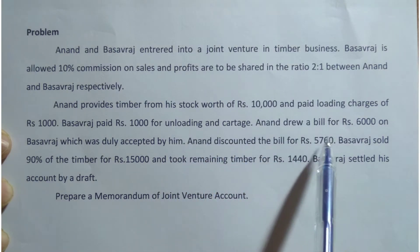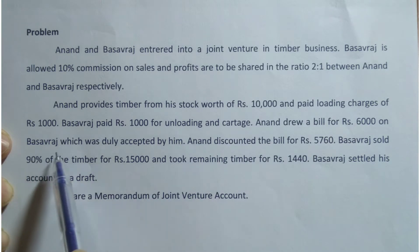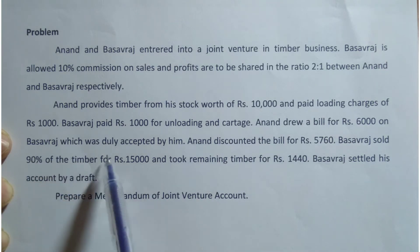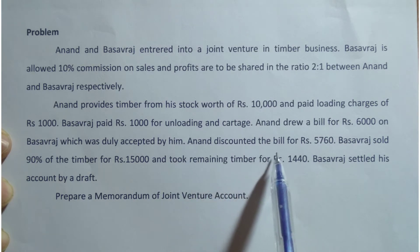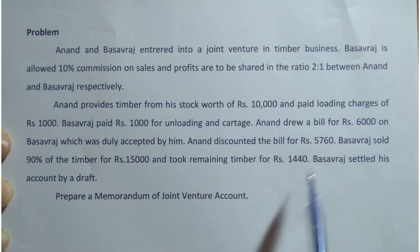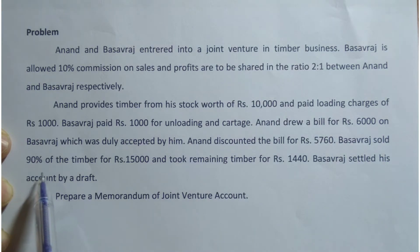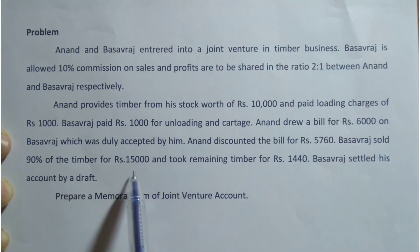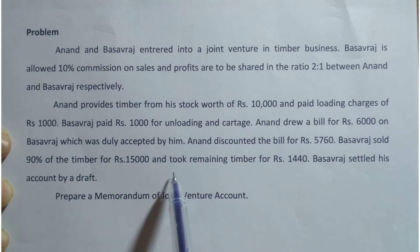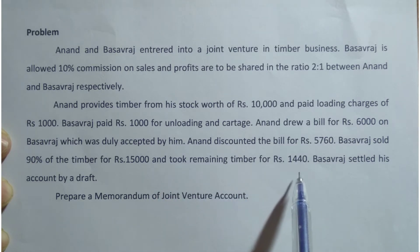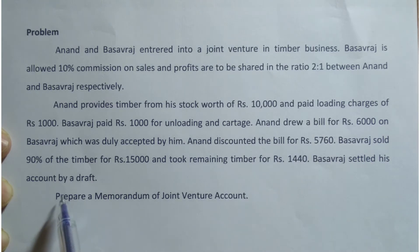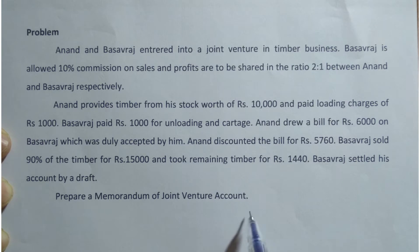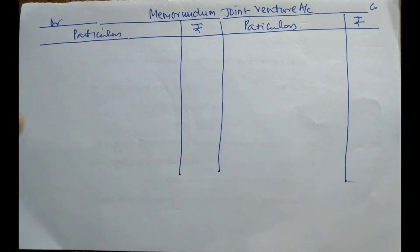Anand drew a bill for Rs. 6,000 on Basavaraj, which was duly accepted by him. Anand discounted the bill for Rs. 5,760. Basavaraj sold 90% of the timber for Rs. 15,000 and took the remaining timber for Rs. 1,440. Basavaraj settled his accounts by a draft. Prepare a Memorandum Joint Venture Account.